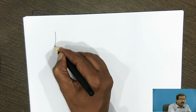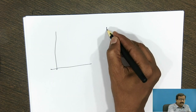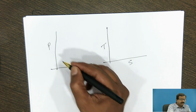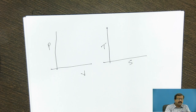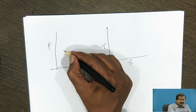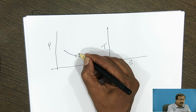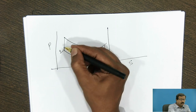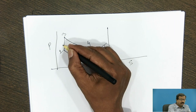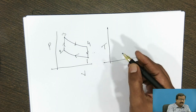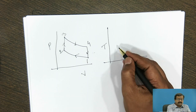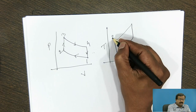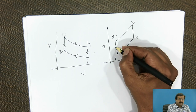If I draw this cycle on a PV diagram and TS diagram, the picture will be more clear. On the PV diagram we go from 1 to 2, 2 to 3, 3 to 4, and 4 to 1. Similarly on the TS diagram, the same sequence: 1 to 2, 2 to 3, 3 to 4, and 4 to 1. We will analyze this cycle in detail.